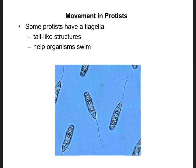We already said that some protists like dinoflagellates have a flagella or more than one flagella — these are tail-like structures that help them swim. We can also classify protists according to whether or not they have a flagella. If they have a flagella, then they are part of the category called a flagellate.